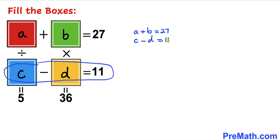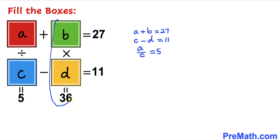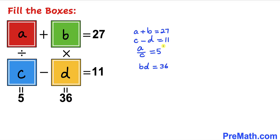Now let's focus on the vertical boxes. The first one: A divided by C equals 5. And finally, B times D equals 36.